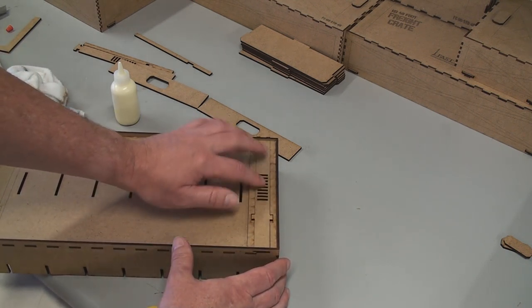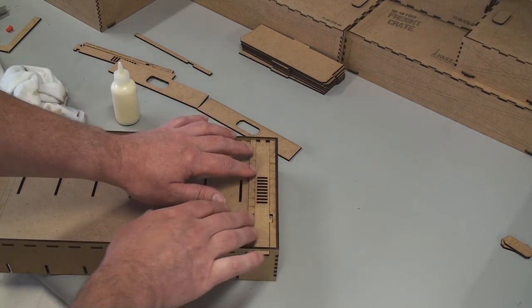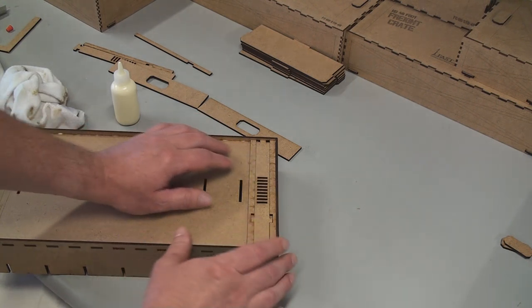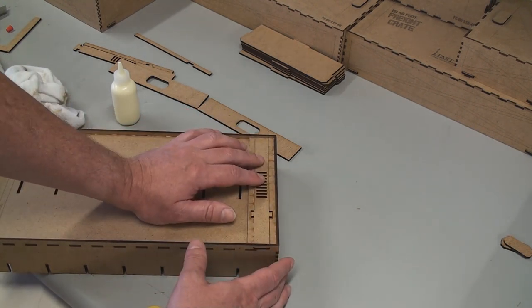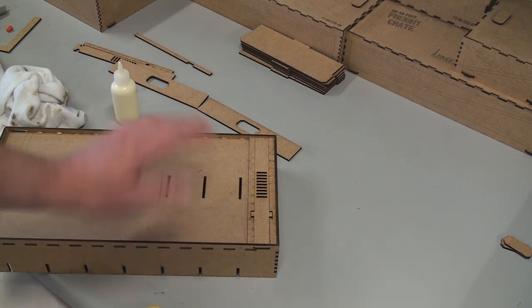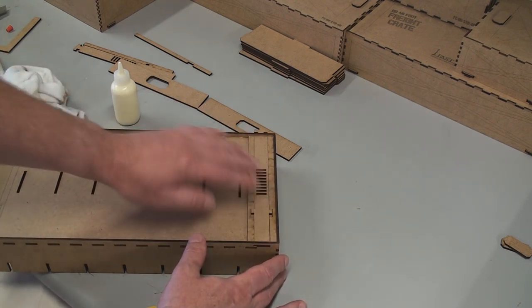Moving it back and forth will cause this to sit itself in a proper position. Plus, if you've got any glue in there, you'll know by the way it feels. If you do get some glue in there, don't panic. As it's curing, just keep moving this back and forth and it'll be fine.